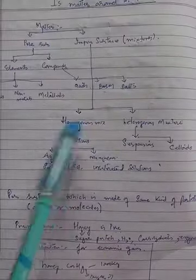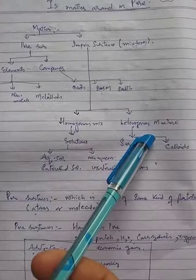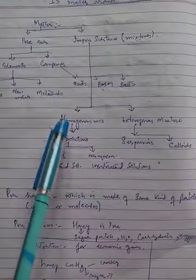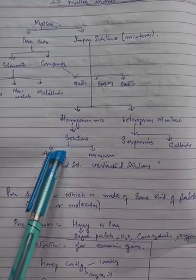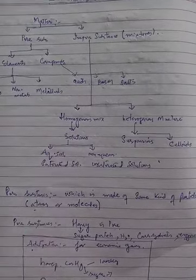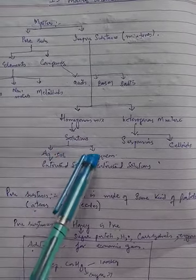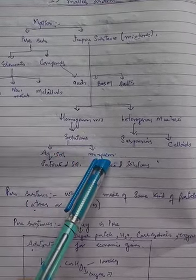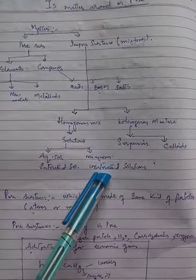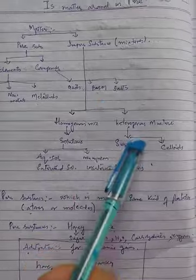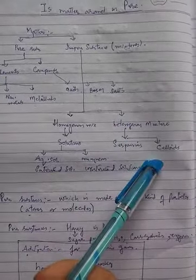Impure substances are classified into homogeneous mixtures and heterogeneous mixtures. Homogeneous mixtures are again classified into solutions, which may be aqueous solutions or non-aqueous solutions, and saturated solutions or unsaturated solutions. Homogeneous mixtures may also include suspensions and colloids.